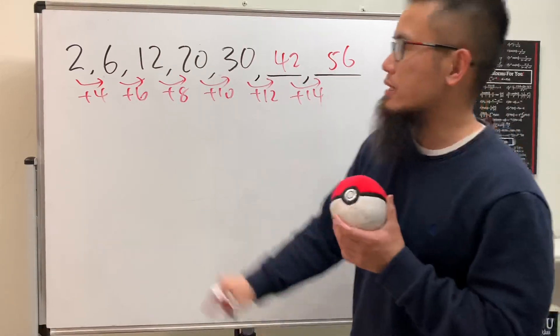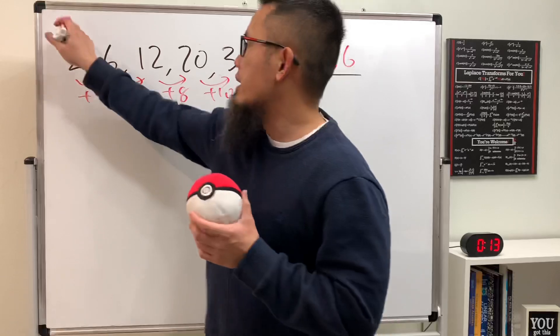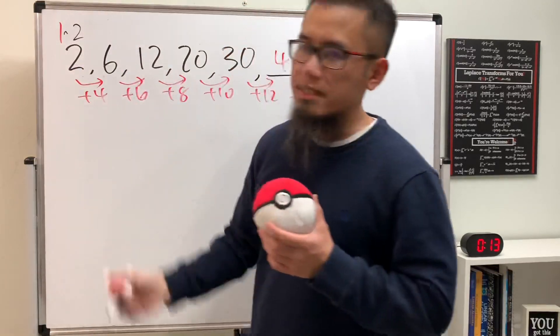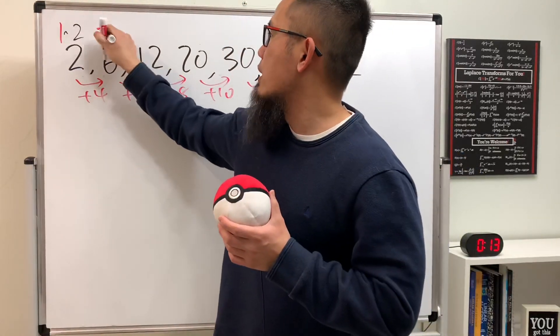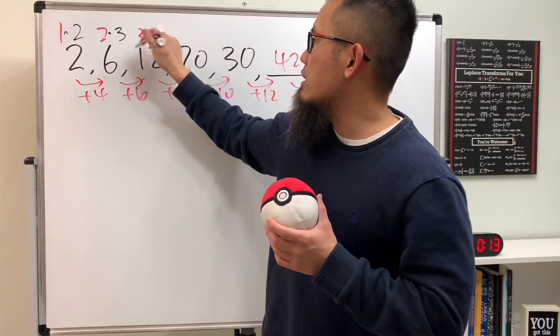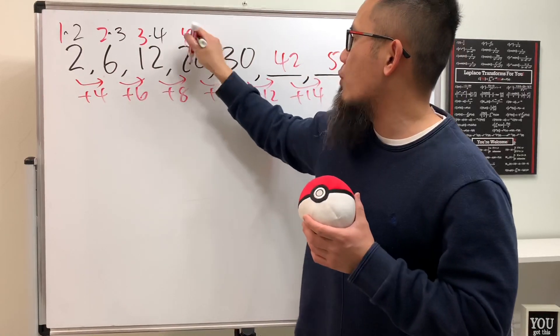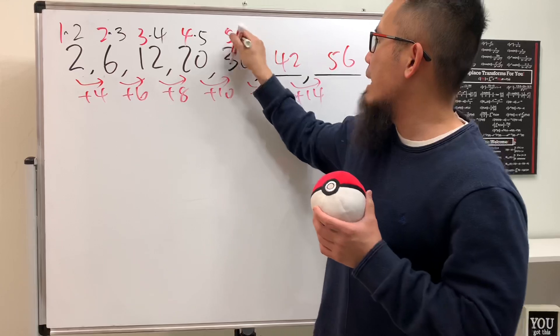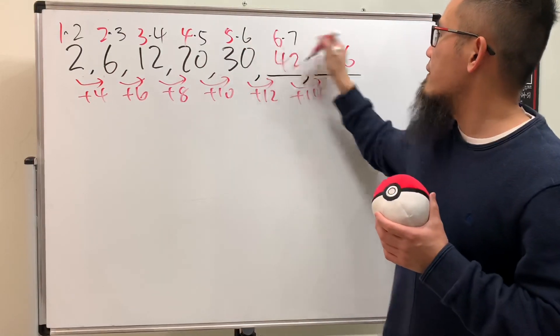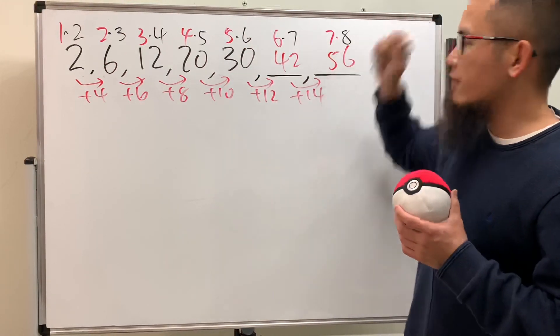Another way to figure this out is check out the 2. 2 is the same as 1 times 2, and 6 is the same as 2 times 3, and then this right here is the same as 3 times 4, and this right here is the same as 4 times 5, and then 5 times 6, 6 times 7, and then 7 times 8. Very nice.